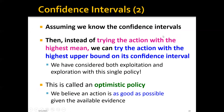Now, assuming we already know the confidence intervals, instead of trying the action with the highest mean like in the greedy algorithm, we can instead try the action with the highest upper bound on the confidence interval. By doing this, we have naturally considered both exploitation and exploration within a single policy. This algorithm is called an optimistic policy, because we believe that an action is as good as possible given the available evidence. Sometimes it's also called optimism in the face of uncertainty.